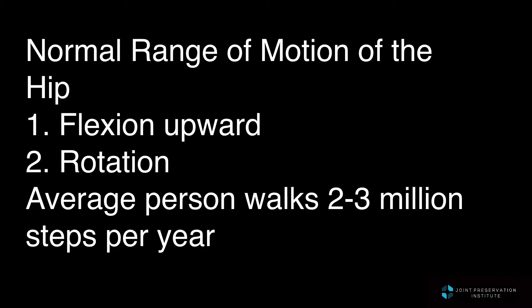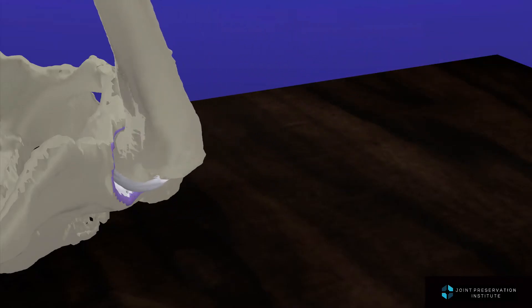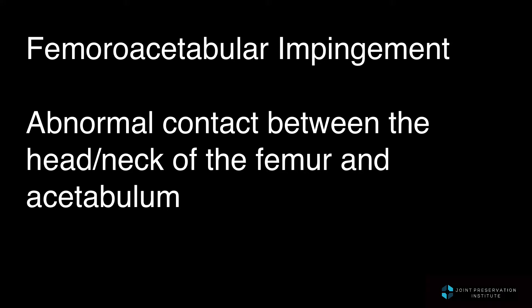The normal range of motion of the hip is made up of flexion upward as well as rotation. The average person walks two to three million steps per year. Femoral acetabular impingement is defined as abnormal contact between the head and neck of the femur and the acetabulum during routine daily activities. There are two types of femoral acetabular impingement, otherwise called FAI. These are CAM FAI and pincer FAI.